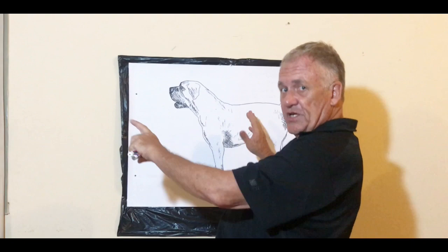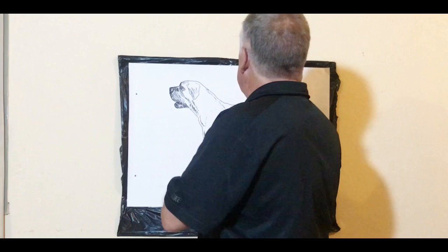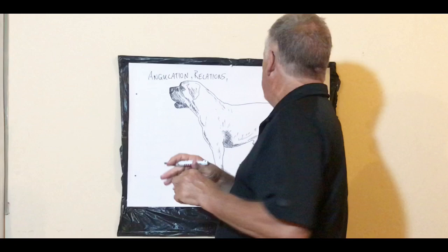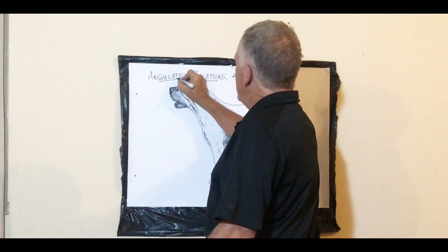There is no such thing. The breed standard describes a certain number of things, and these things can be summarized in the words angulation, relations between one part of the body and another part of the body, and levels — certain parts of the body will be in a certain level relationship with another part of the body.